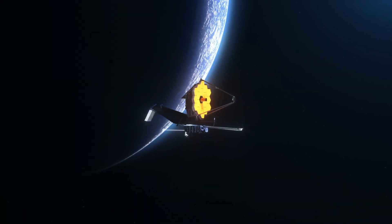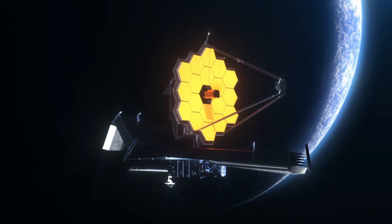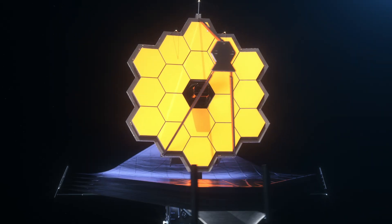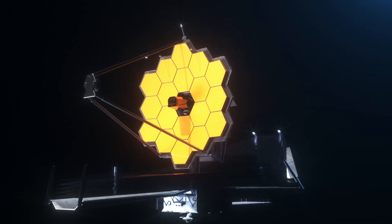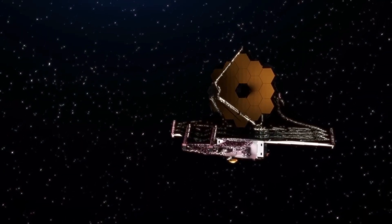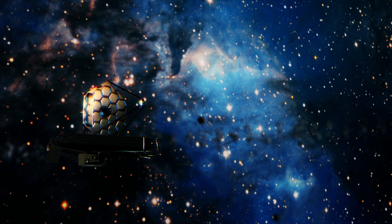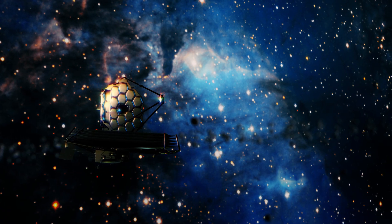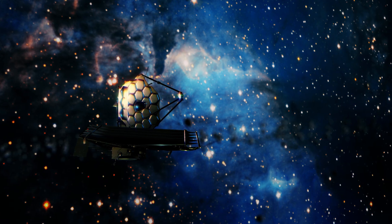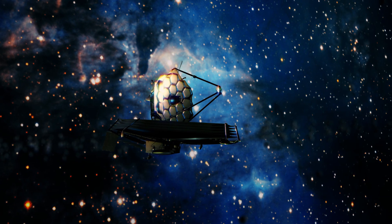The James Webb Space Telescope was launched to look deeper into space than any telescope before it. Its job was to study distant galaxies, see how stars are born, and look back in time close to the beginning of the universe. Because it uses powerful infrared vision, James Webb can see light that has been traveling for more than 13 billion years. That means it's showing us what the universe looked like shortly after the Big Bang.